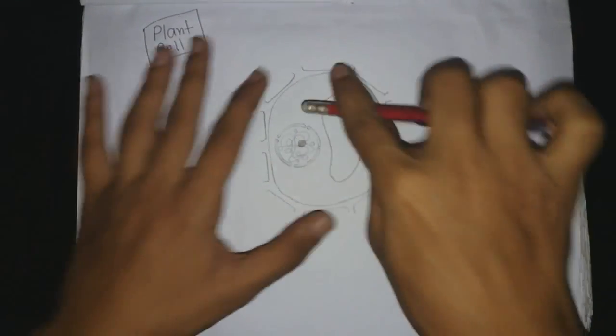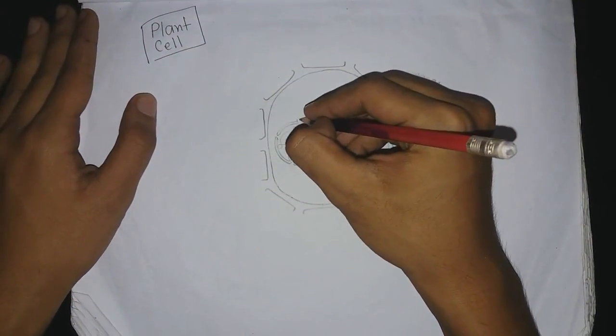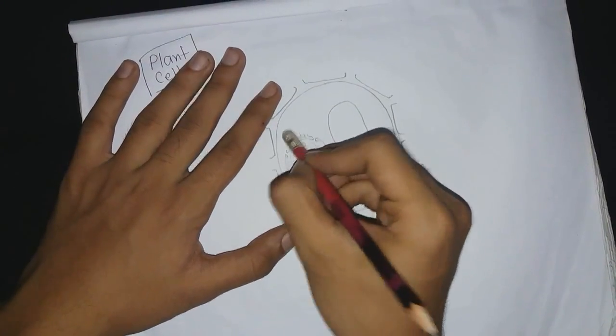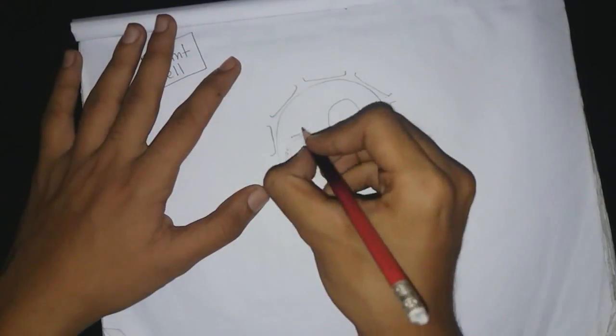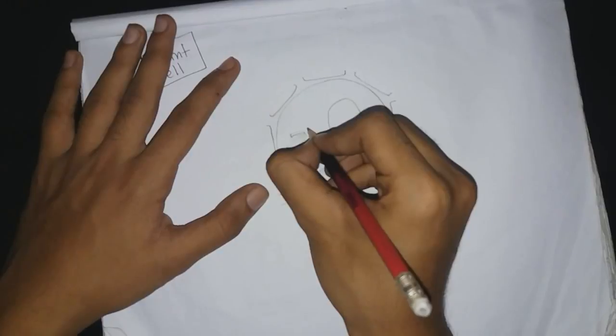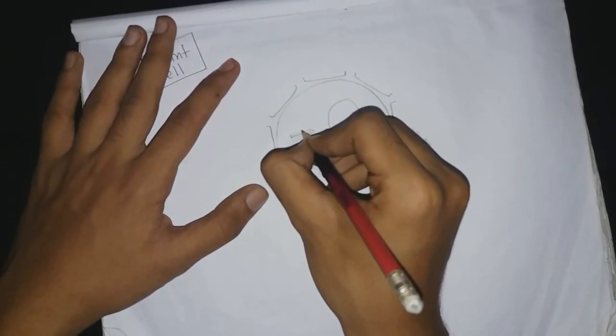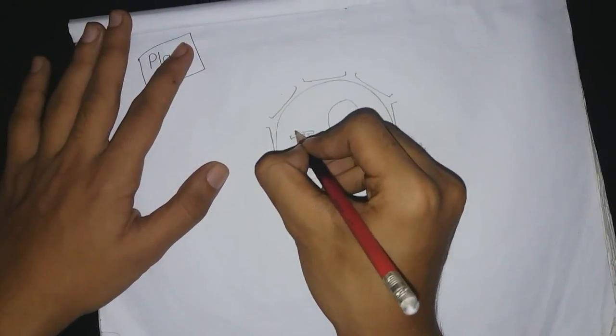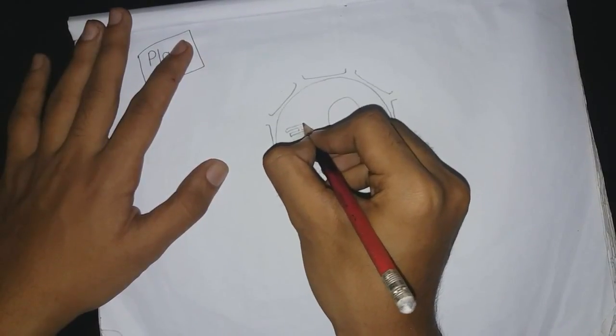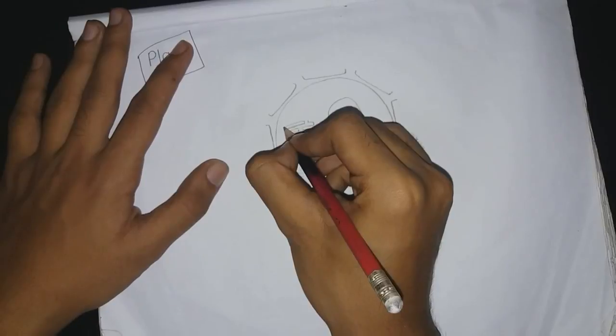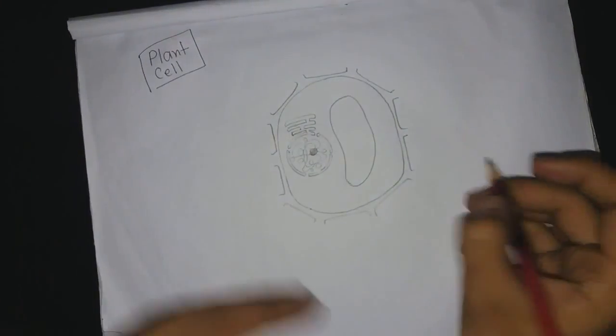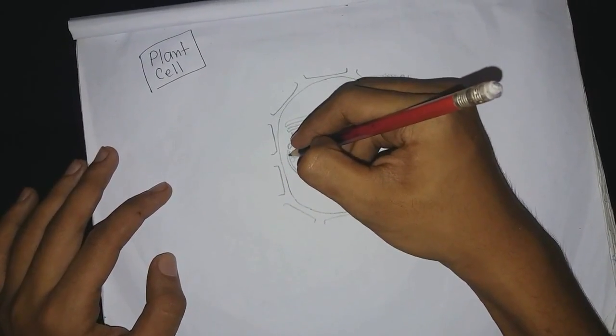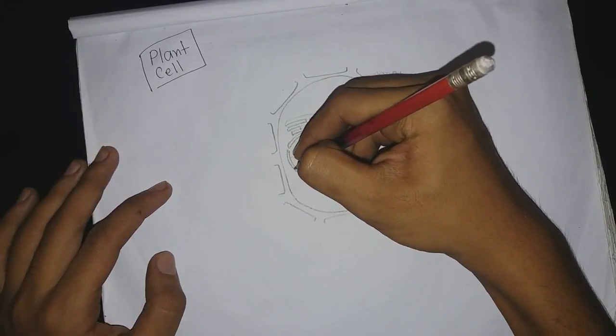Then what we need now is endoplasmic reticulum. I'm giving endoplasmic reticulum. Okay I'm done with endoplasmic reticulum. Let me bold the nuclear membrane so that it looks good.